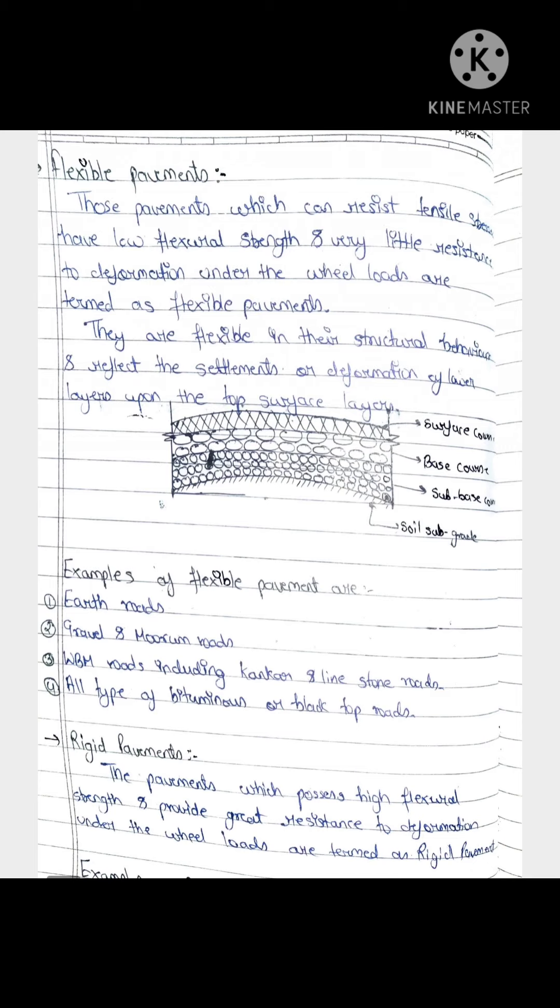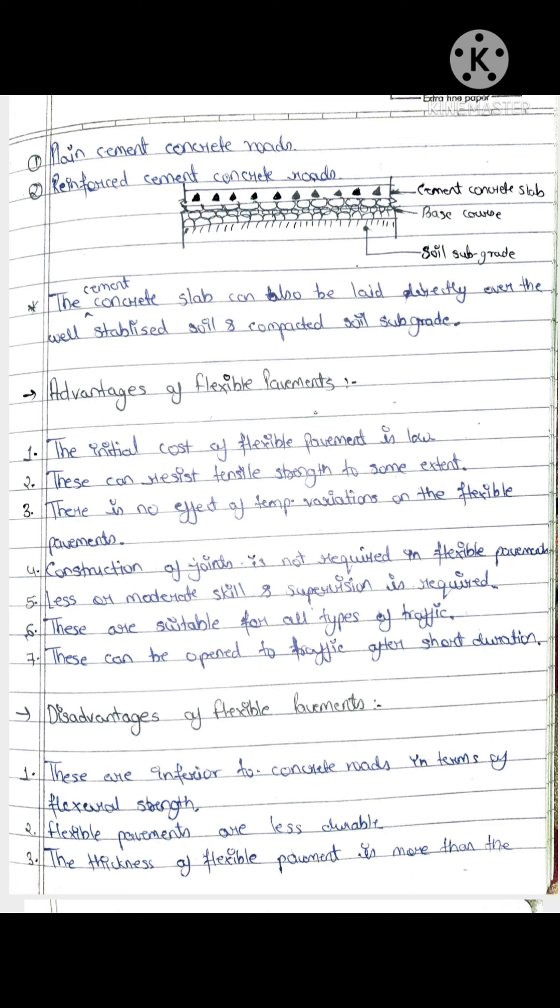These are the pavement which have high flexural strength and can resist the wheel load and deformation. This is rigid pavement. Examples include reinforced cement concrete roads. Reinforcement means steel wires are used.